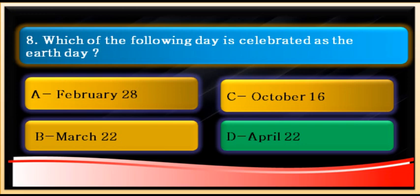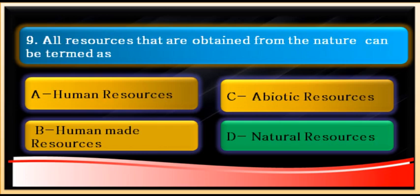So Earth Day is celebrated on April 22. Question number nine: all resources obtained from nature can be termed as what? This is an easy question — they are called natural resources. Resources obtained from nature are natural resources, while abiotic resources are obtained from non-living things.